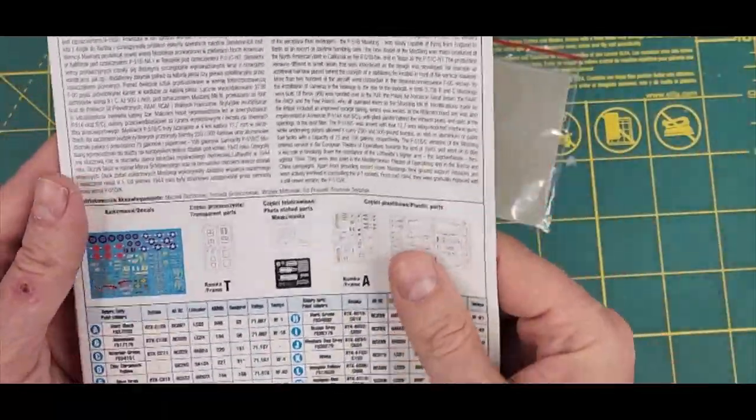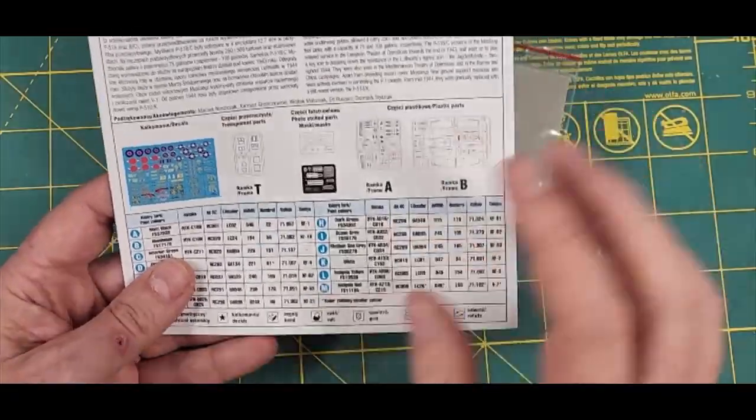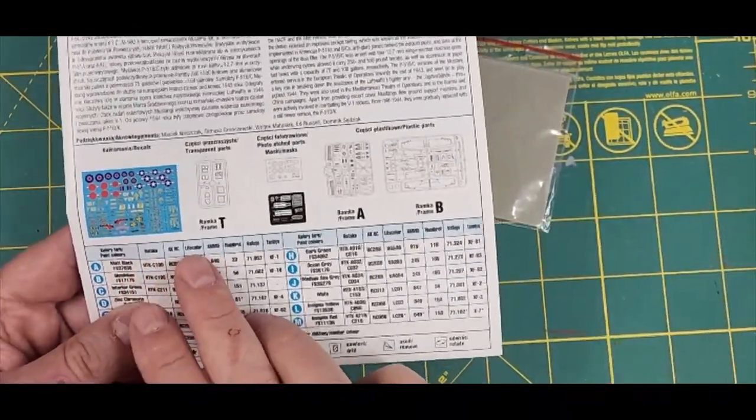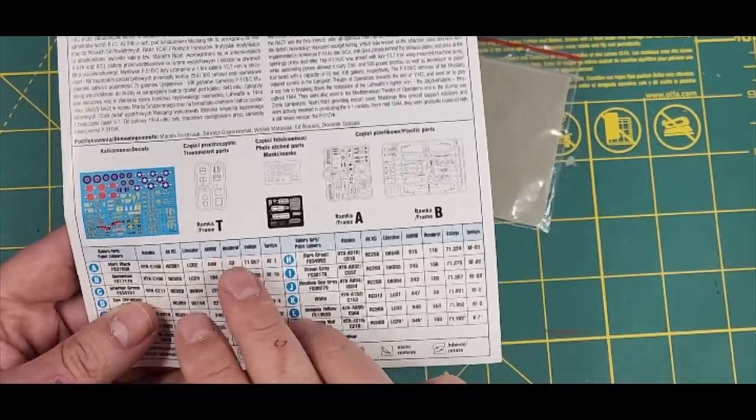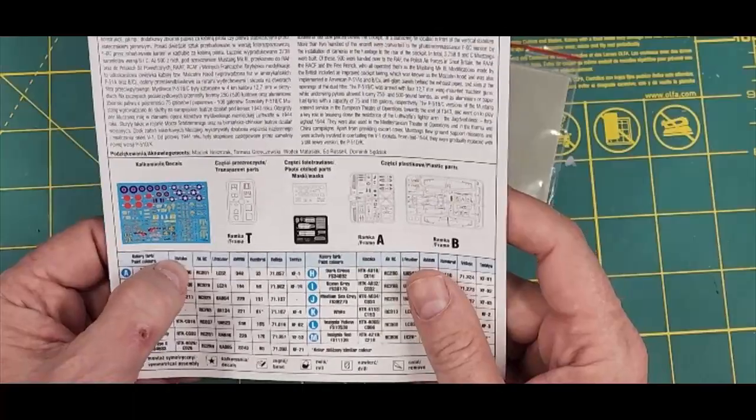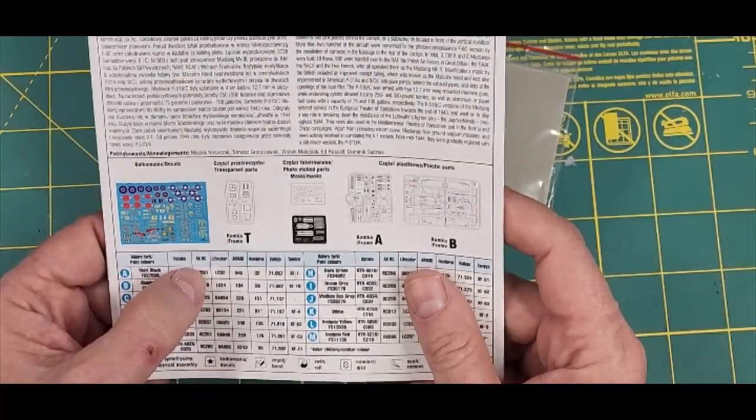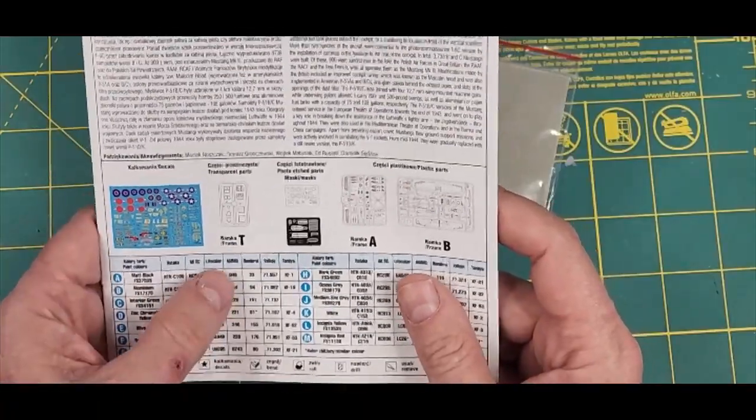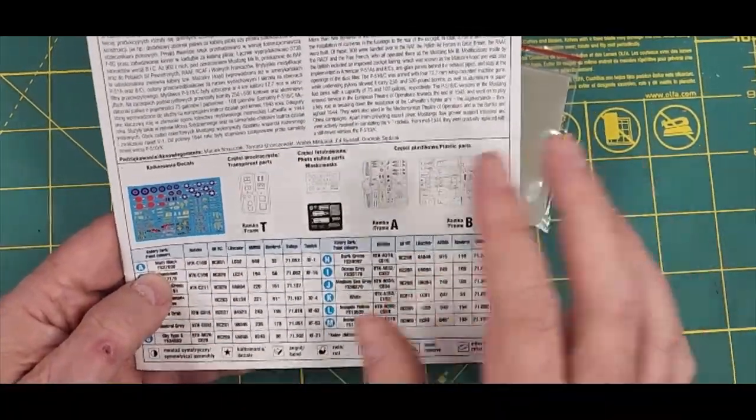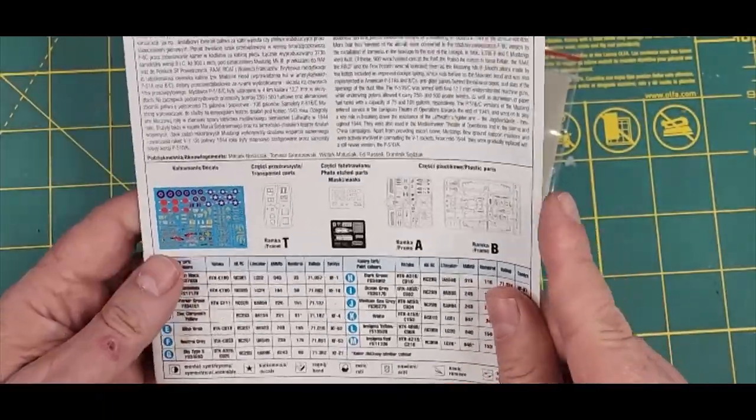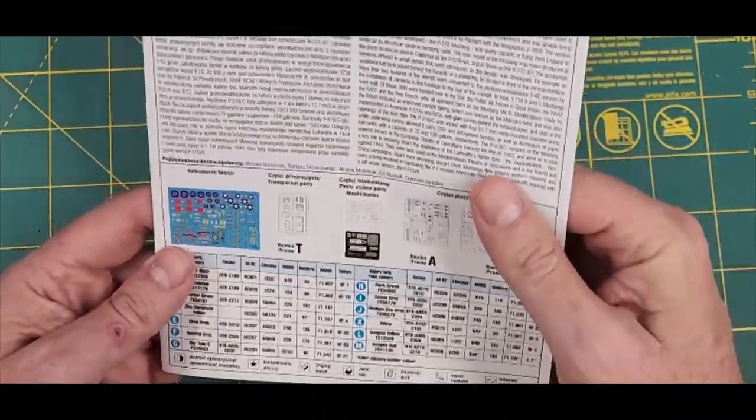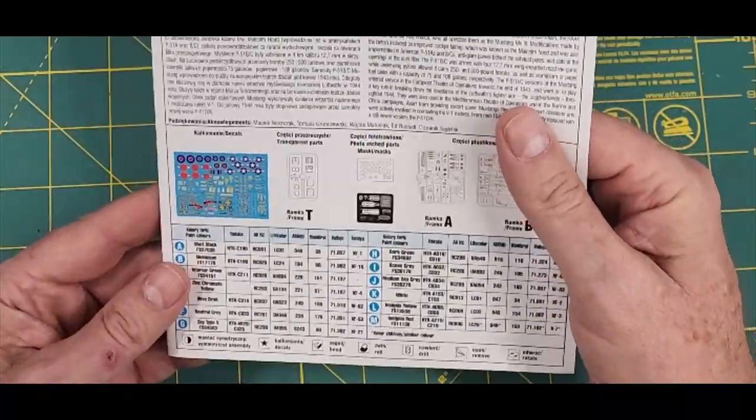Now the instructions themselves are pretty amazing. They're very, very well done. The color callouts call for, they're done with Hataka, AK-RC, Life Color, Ammo, Humbrol, Vallejo, and Tamiya paints. I use AK-RC and Hataka a lot and obviously Tamiya, but I have some Life Color. I'm very happy that they give color callouts for Hataka. Hataka is fantastic paint and I will be using Hataka paint on my build just to demonstrate how magnificent it is.